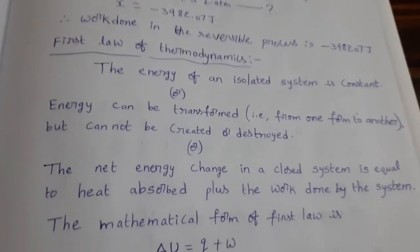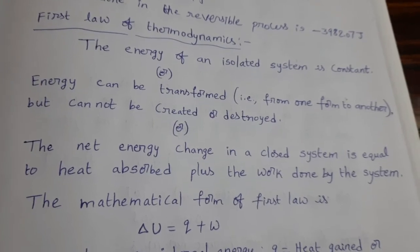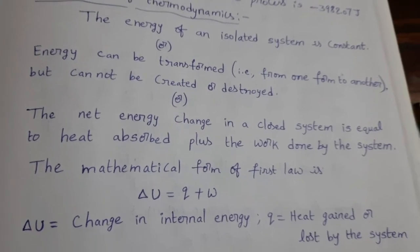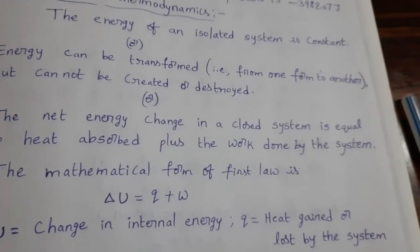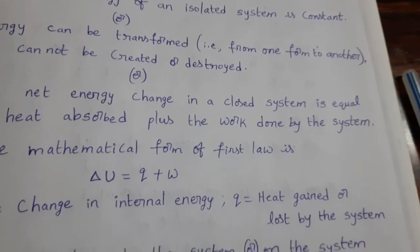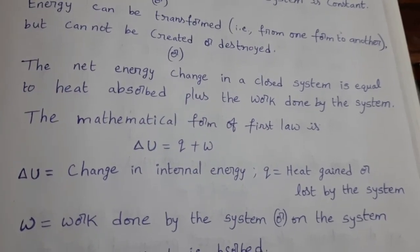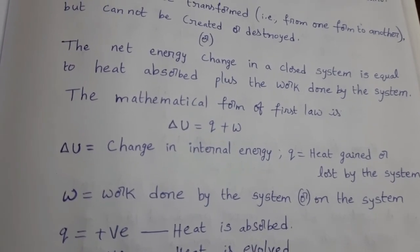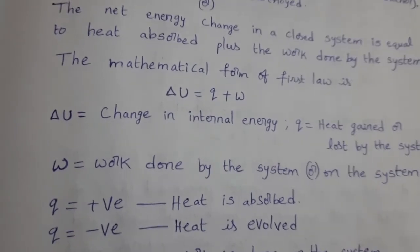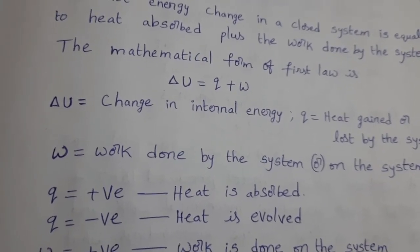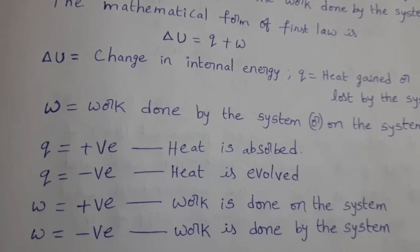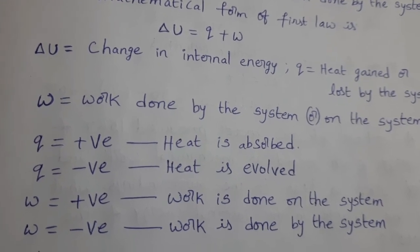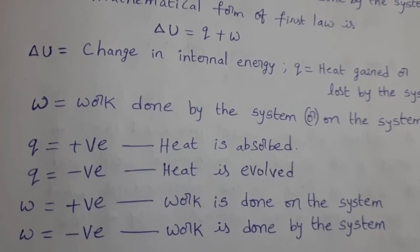The mathematical form of the first law is: delta U equals Q plus W. Here, delta U is the change in internal energy, Q is the heat gained or lost by the system, and W is the work done by or on the system. Sign conventions: Q is positive when heat is absorbed; Q is negative when heat is evolved (released). W is positive when work is done on the system; W is negative when work is done by the system.